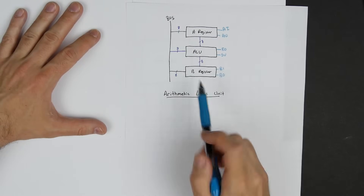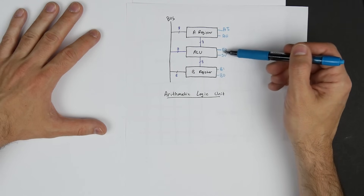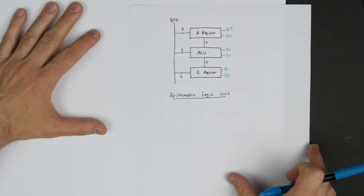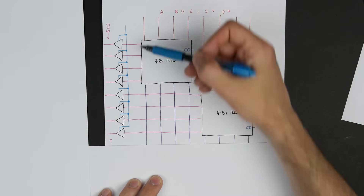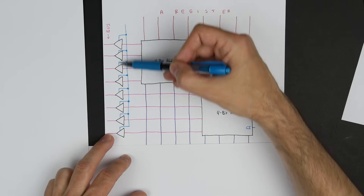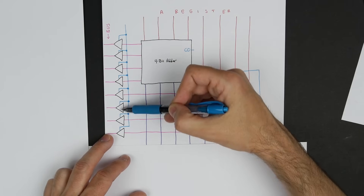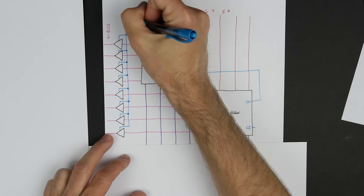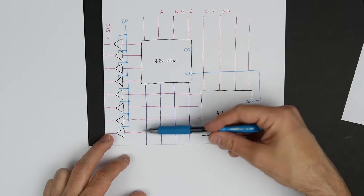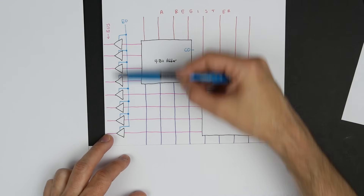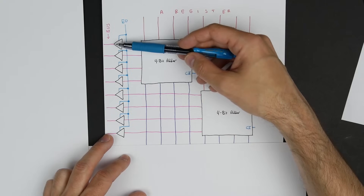We don't always want to output the result — we only want to output it when the sum-out signal is active. So we do the same thing we did with our registers and use tri-state logic. We take our outputs and put them into tri-state buffers, then connect the enable of all of these buffers together. This is our EO, or sum-out signal. When it's active, we're asserting the result of our addition onto the bus. When it's inactive, the buffers are essentially disconnected from our bus.